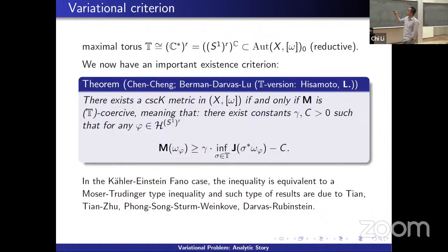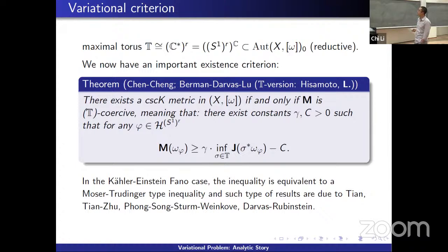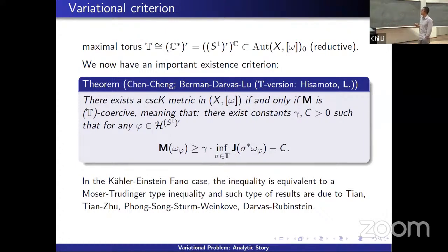Now I can state a criterion for the existence of cscK metrics. We fix a maximal torus inside the automorphism group, which we assume to be reductive by the Matsushima-Lichnerowicz theorem — that is a necessary condition for existence. The theorem says there exists a cscK metric in the Kähler class if and only if the Mabuchi functional is coercive: there exist constants such that for any S^1-invariant potential, the inequality M(phi) ≥ epsilon * inf_T J(T*phi) - C holds. This is intuitive: if a minimizer exists, the functional should grow to infinity as we go to infinity in the space of Kähler forms. In the Kähler-Einstein case, this inequality is equivalent to a Moser-Trudinger type inequality, proved by Tian, Phong-Song-Sturm-Weinkove, and later refined by Darvas and Rubinstein.